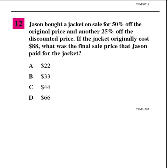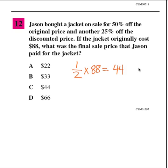Problem 12: Jason bought a jacket on sale for 50% off the original price and another 25% off the discounted price. If the jacket originally cost $88, what was the final sale price? First we take 50% off — half of 88 is 44.